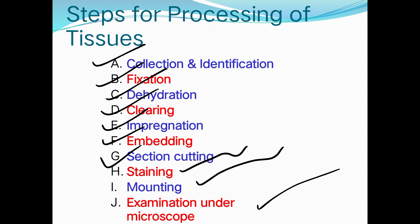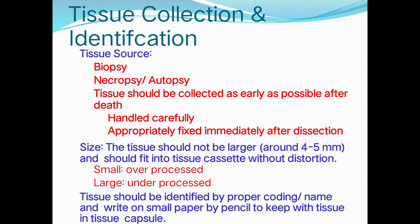Regarding tissue source: biopsy, necropsy, and autopsy are options. Tissue should be collected as early as possible after death, handled carefully, and fixed immediately after dissection. Regarding size, the tissue should not be larger than 4 to 5 mm, though up to 10 mm (1 cm) is acceptable in practice.